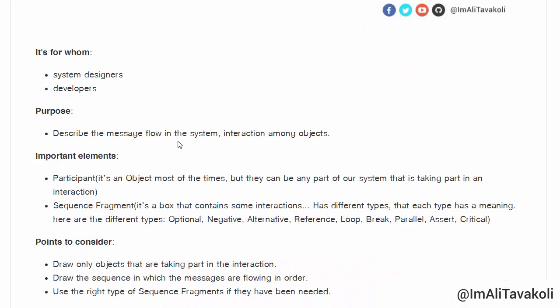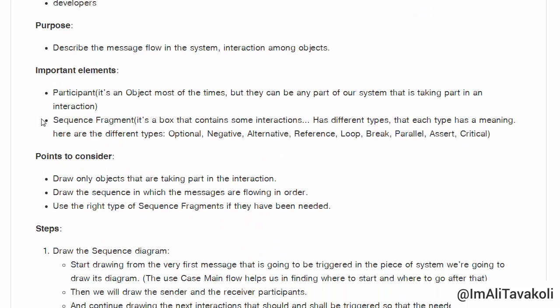Who is this sequence diagram for? System designers and developers. Its purpose is to describe the message flow in the system and the interaction among objects. Important elements include the participant — which is an object most of the time but can be any part of the system taking part in an interaction — and the sequence fragment, which is a box containing interactions with different types: optional, negative, alternative, reference, loop, break, parallel, assert, and critical.